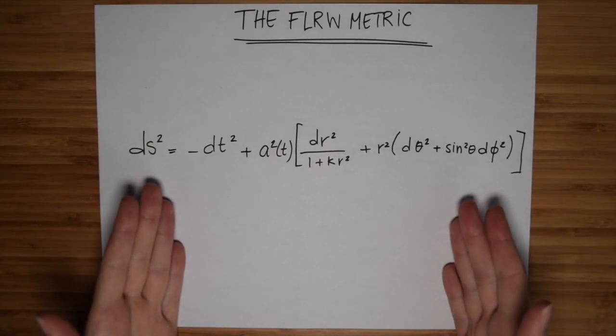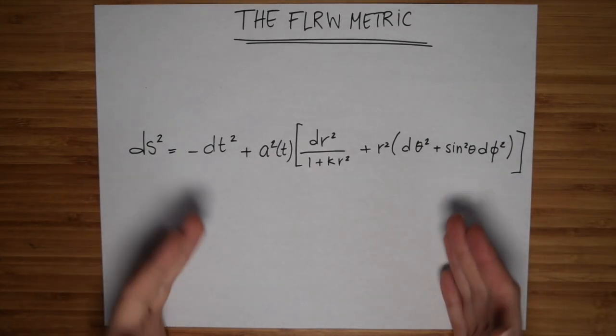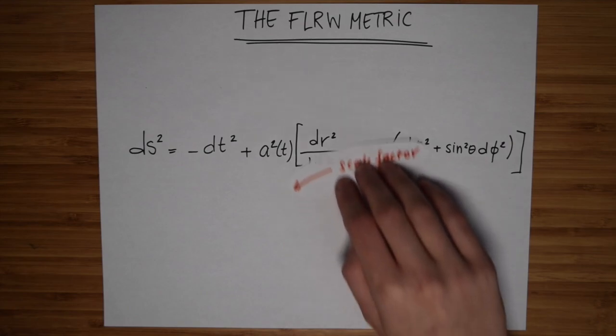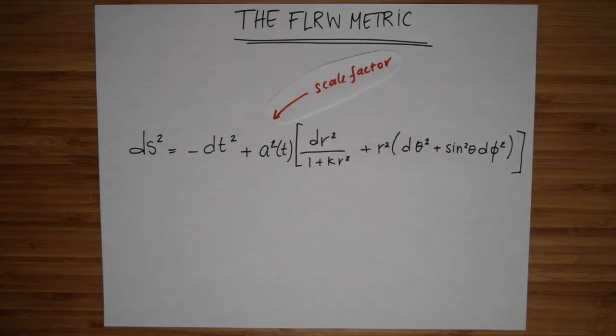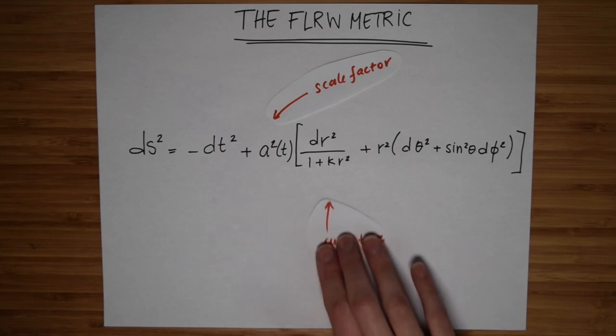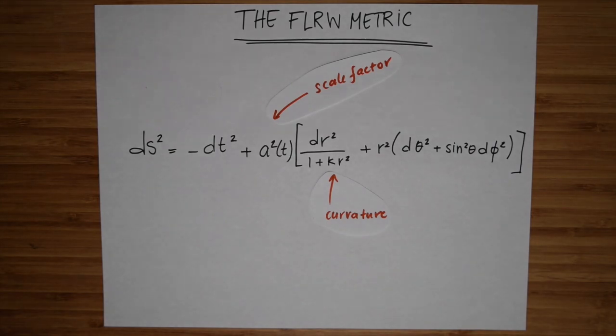This is the FLRW metric in polar coordinates. This A over here is what we call the scale factor, and it basically tells you how the spatial components of the metric grow as a function of time. The parameter k is called the curvature. For those of you who are familiar with GR or differential geometry, this is not the same thing as the Ricci or Riemann curvature. This curvature only has to do with the spatial components of the universe, not the curvature of the entire spacetime manifold.